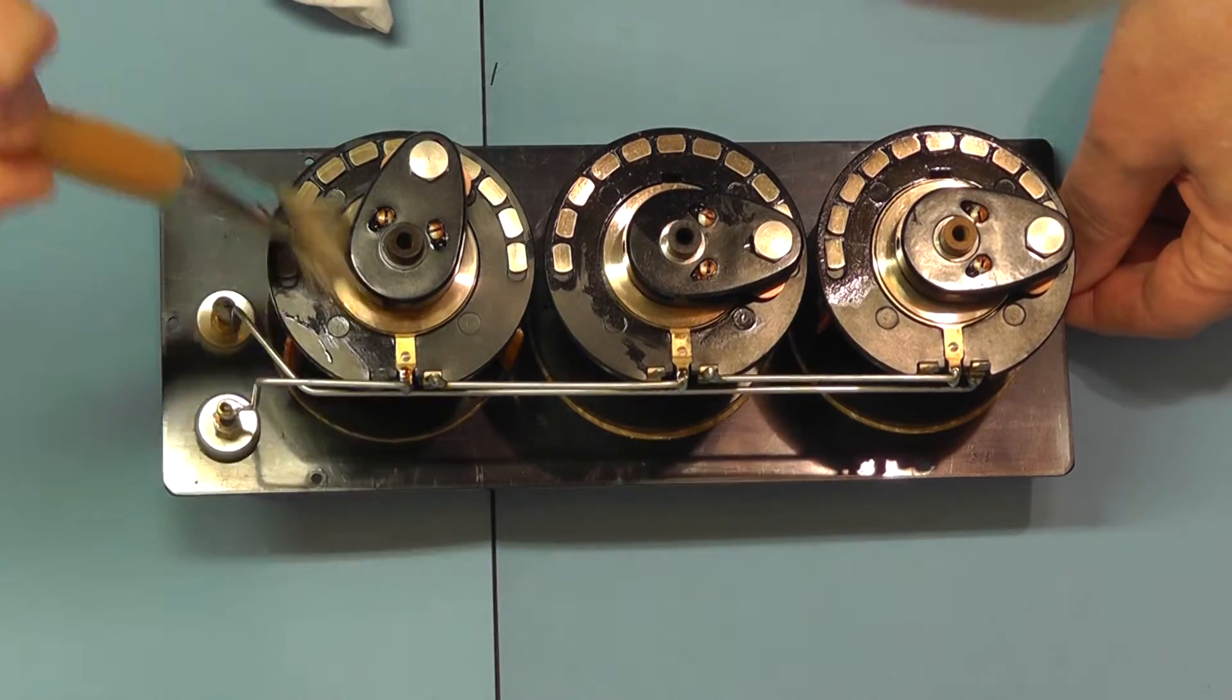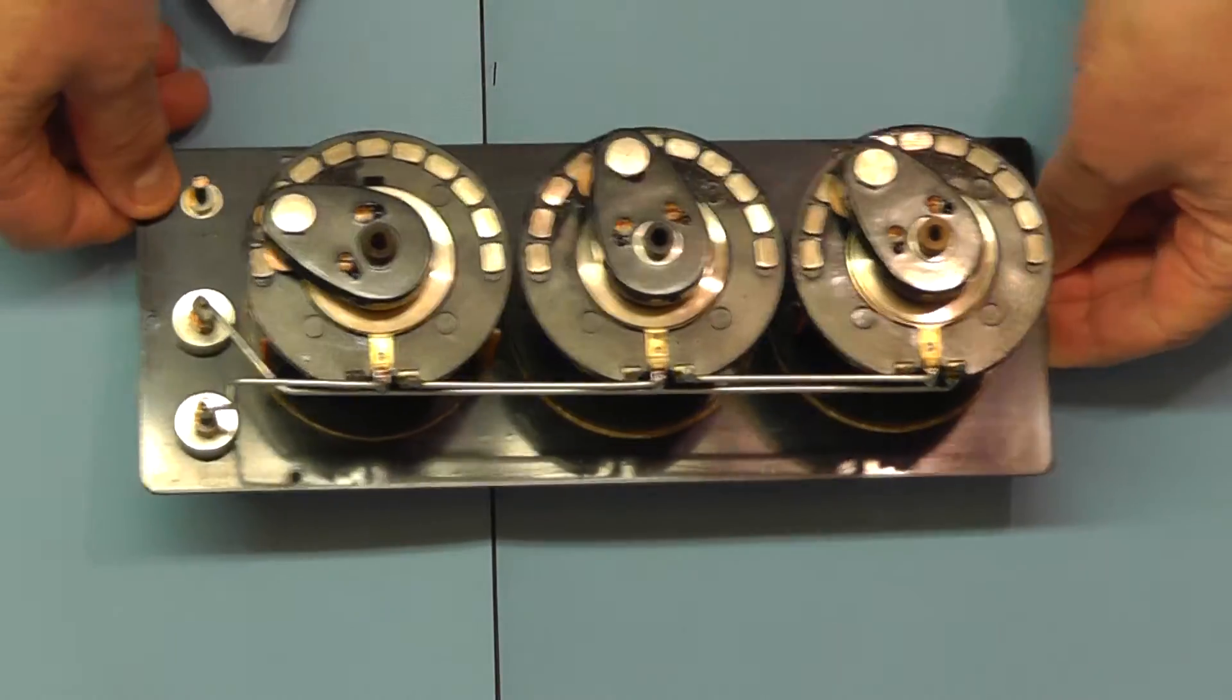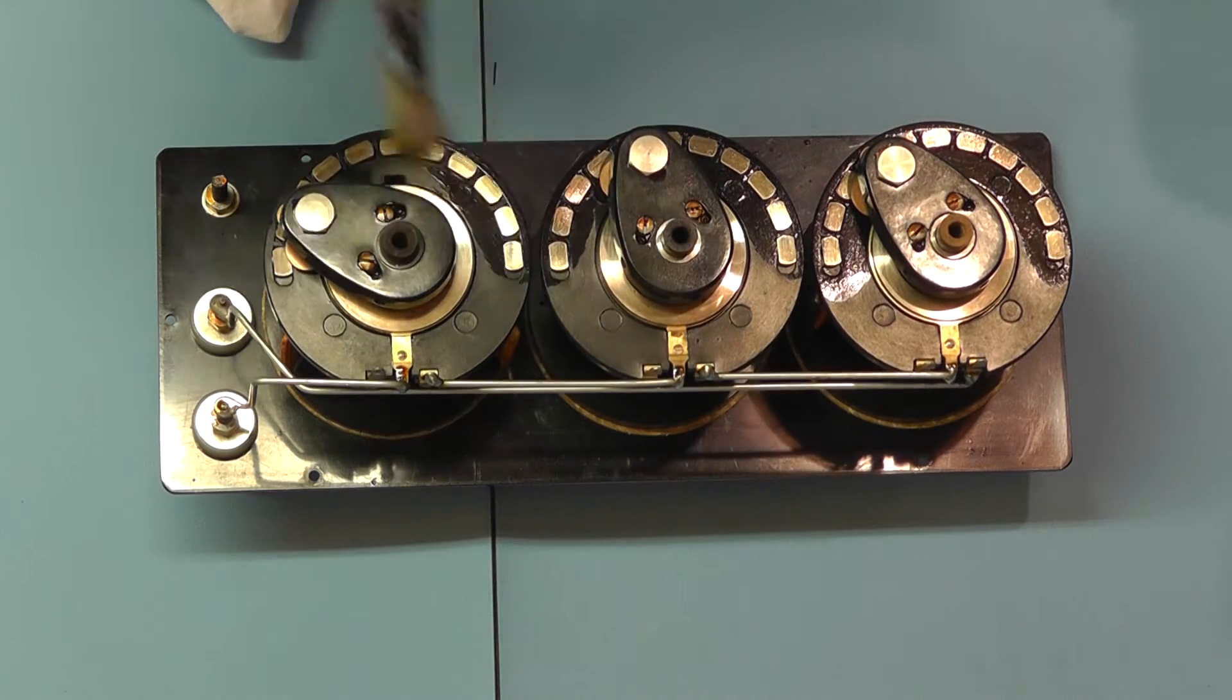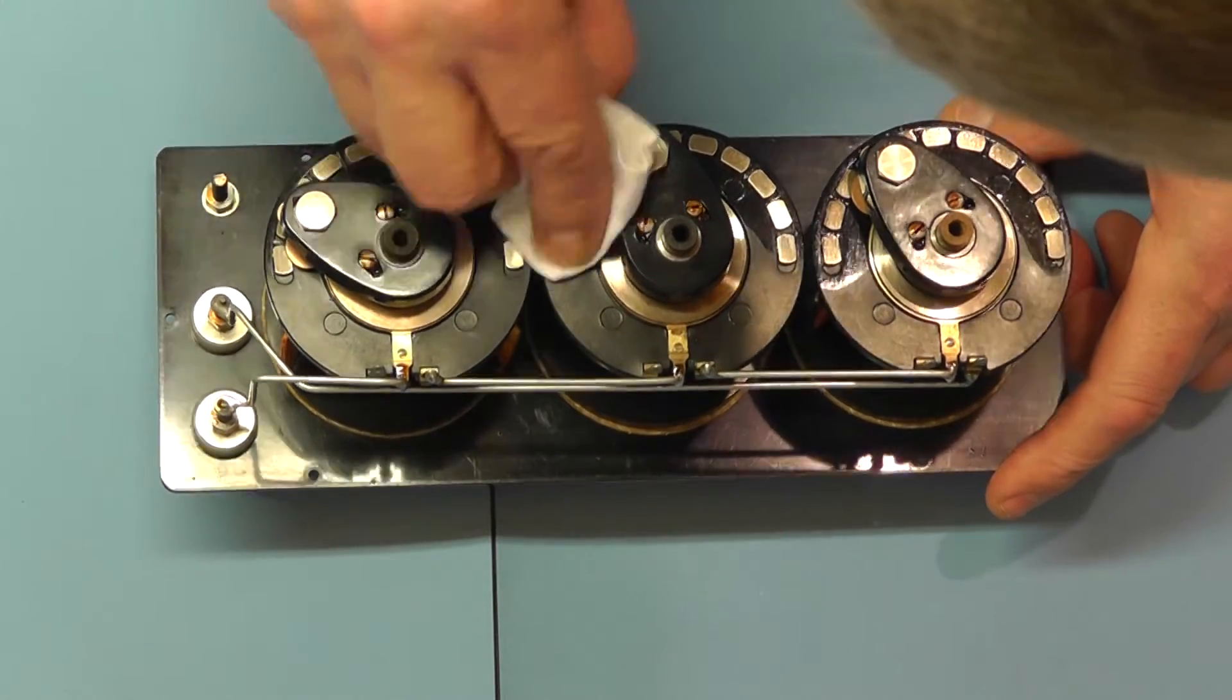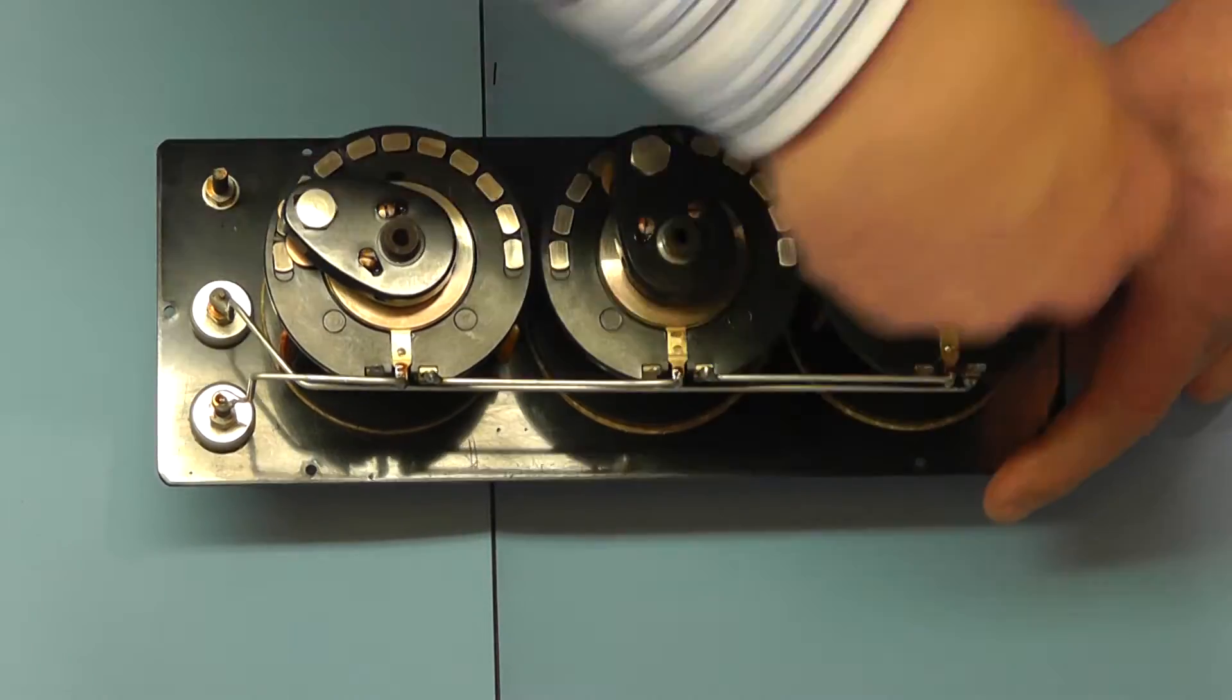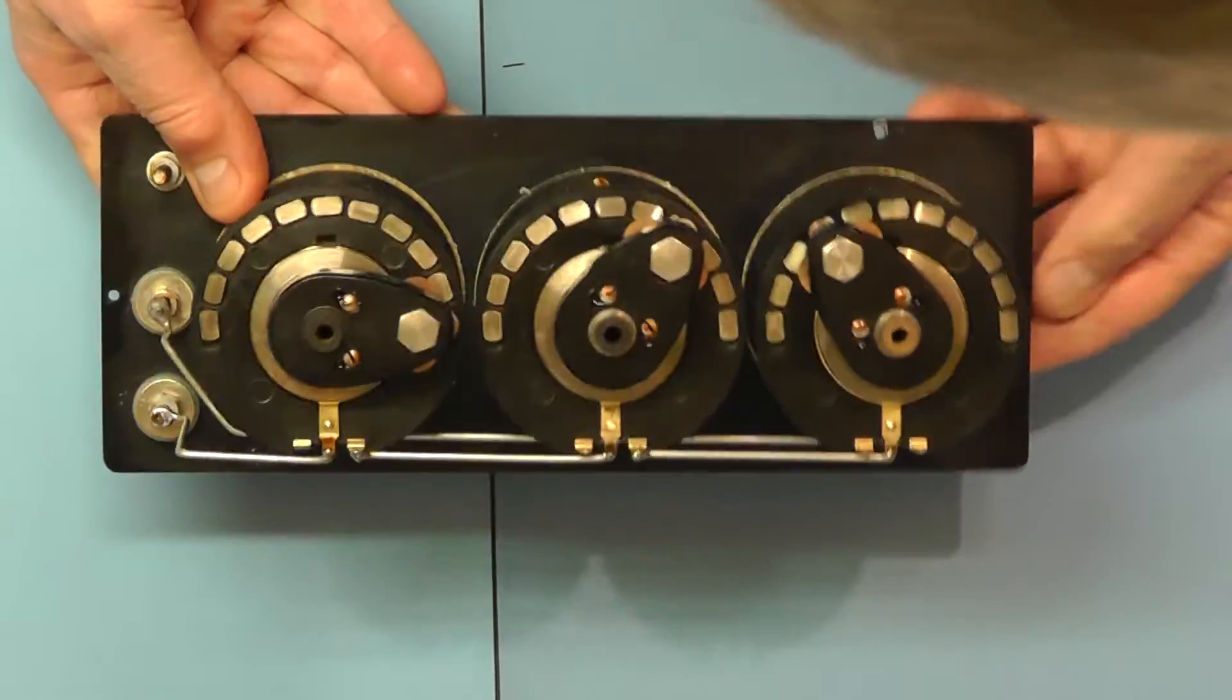I'm going to clean the inner switch ring there on each of the switch mechanisms. So I'm just brushing some isopropyl on the switch contacts and give them a wipe. They look much better.